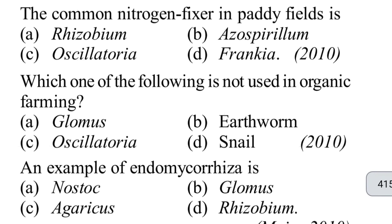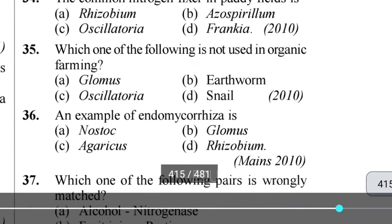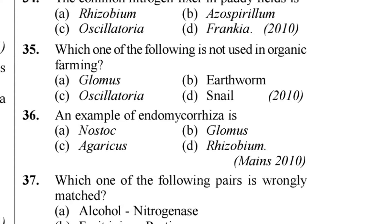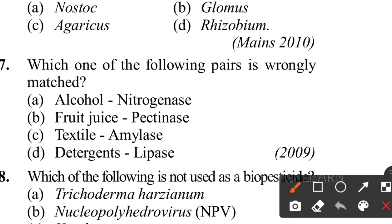Thirty-fifth question: which of the following is not used in organic farming? Options are Glomus, earthworm, Oscillatoria, and snail. The answer is snail - there is no role for snail in organic farming. Glomus, earthworm, and Oscillatoria are all used. Thirty-sixth question: an example of endomycorrhizae is Glomus. Glomus is an endomycorrhizae, a symbiotic association with plants. It absorbs phosphorus from the soil and passes it to the plant.